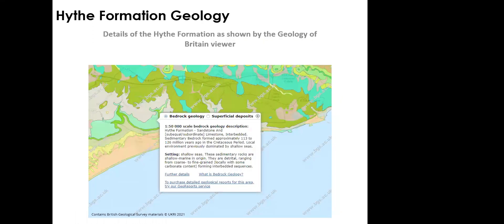Looking at the Geology of Britain viewer online, the Hythe Formation comprises interbedded sandstone and ragstone (limestone) units in sub-equal or subordinate amounts. It is Cretaceous in age and was deposited within a shallow seas environment.